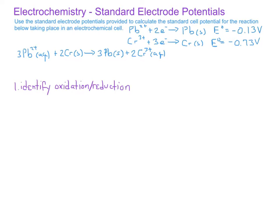In this case, the lead 2+ ions on the reactant side are becoming lead metal on the product side. That means the lead ions are gaining electrons, which means the lead ions are being reduced. On the other hand, the chromium metal on the reactant side is becoming chromium ions on the product side, which means the chromium metal is losing electrons — so the chromium metal is being oxidized.